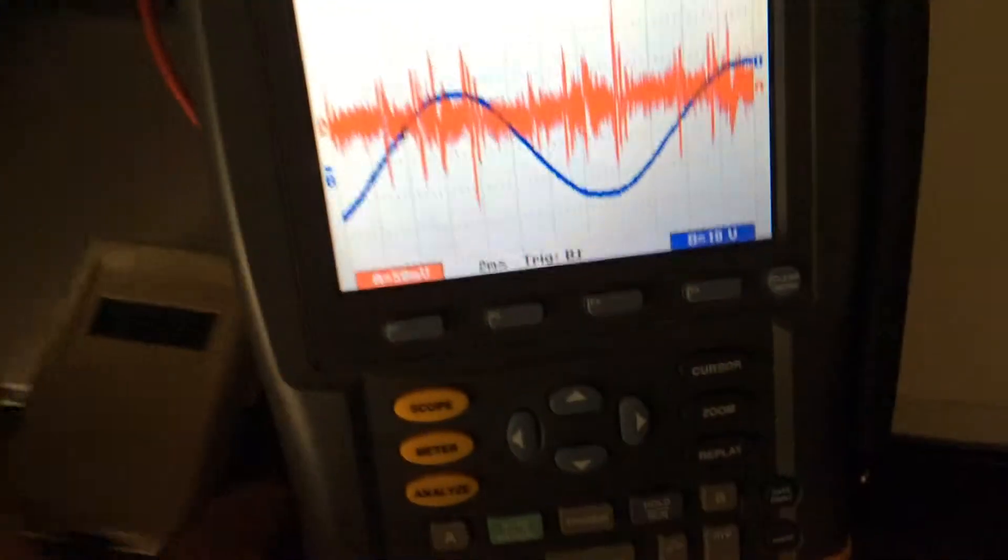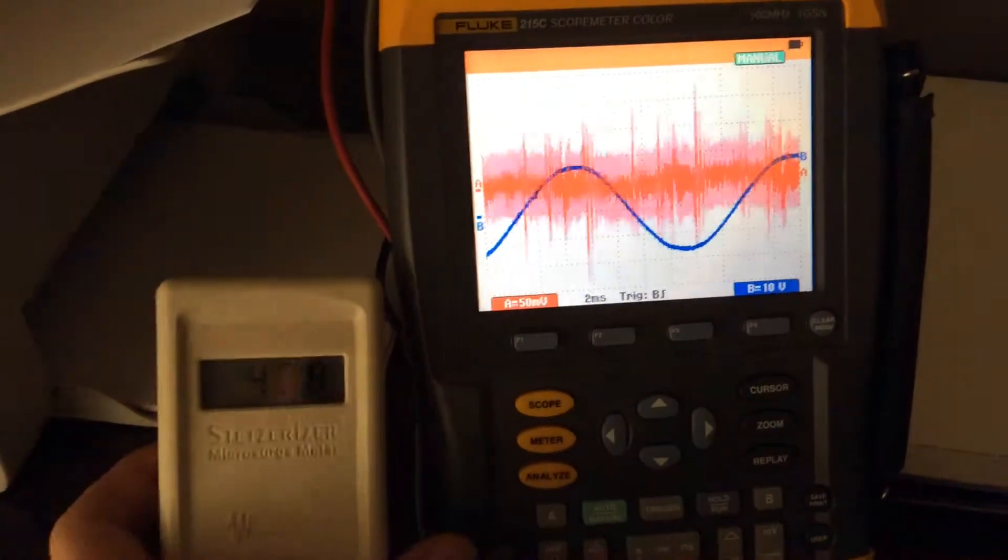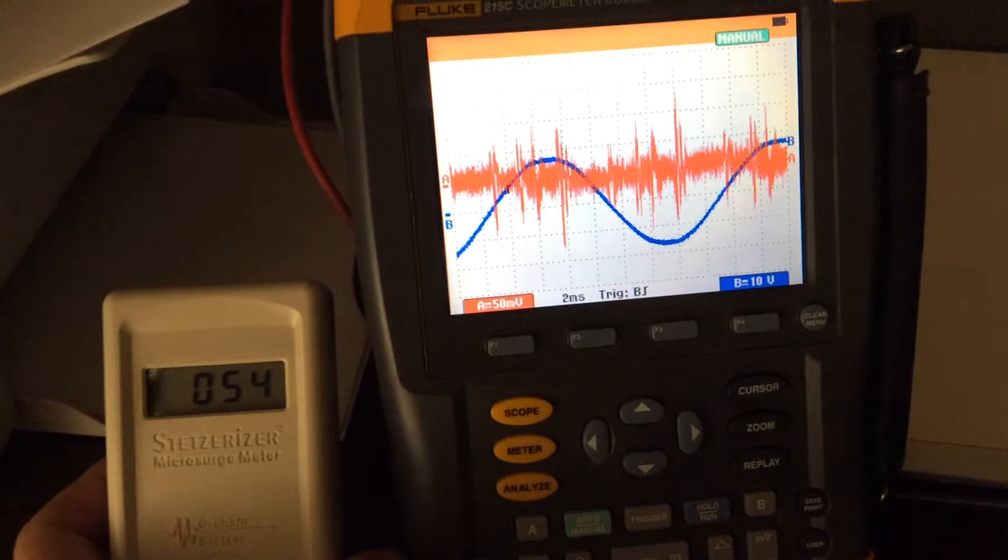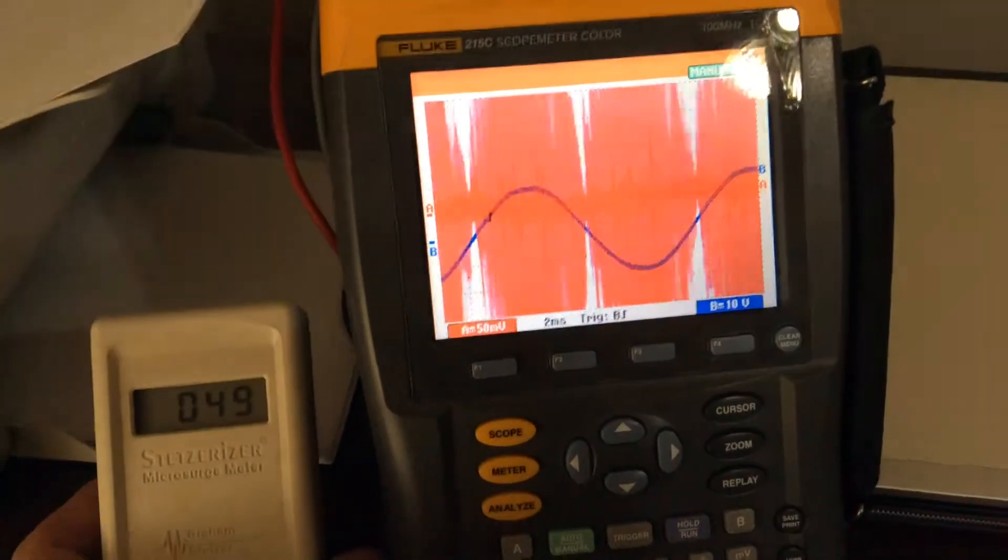Okay, so this is what the oscilloscope and the stetsorizer microsurge meter is showing with the lights off. Go ahead and turn the lights on.